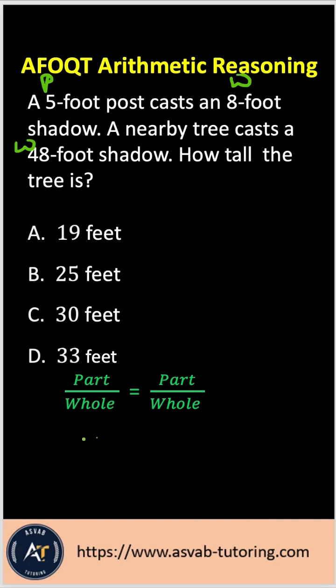So, let me write that down. 5 over 8 equal to x over 48.